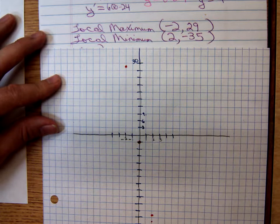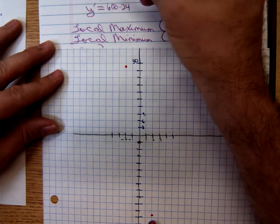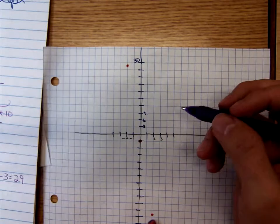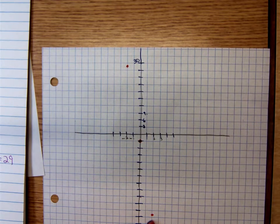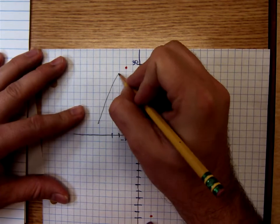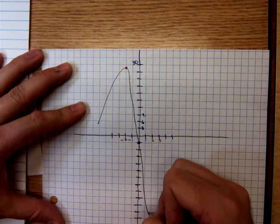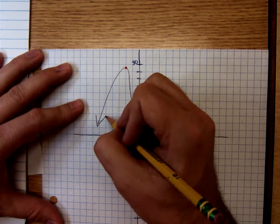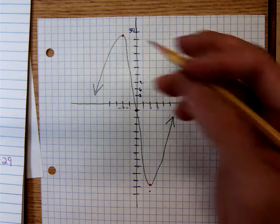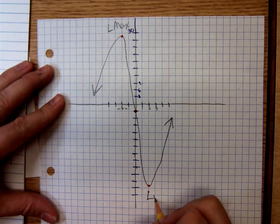So it's increasing, decreasing, increasing. So it goes up, hits the local maximum, starts going down, passes through 0, negative 3, and changes concavity. So it was increasing, decreasing, increasing. Here was my local maximum. Down here I had my local minimum.